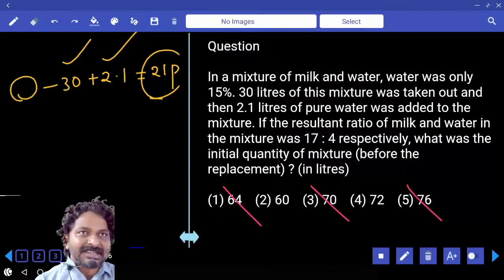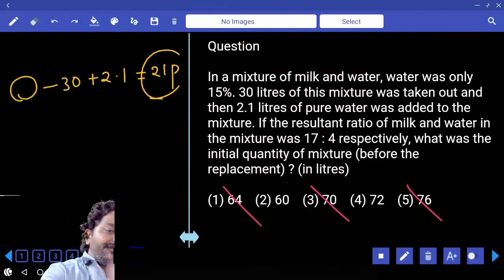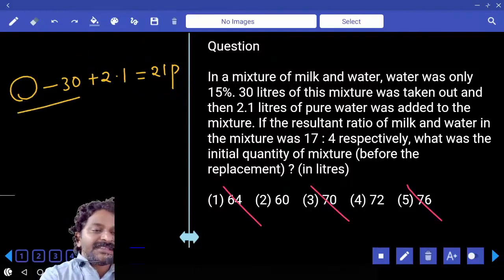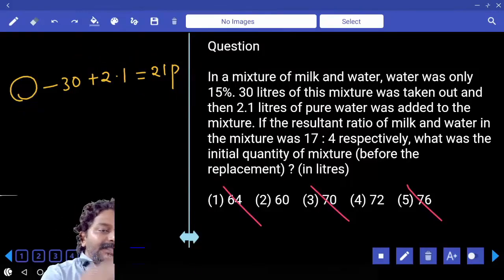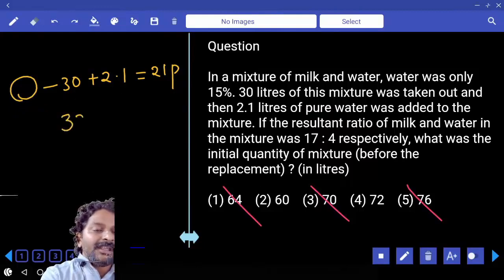Let me start with 60. If the first value is 60, 60 minus 30, 30 plus 2.1, 32.1, correct?